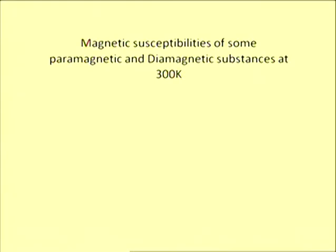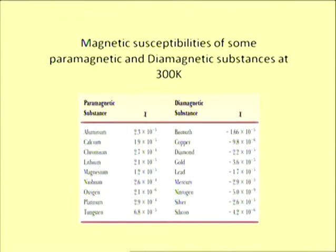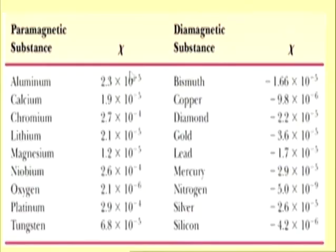Here we have a list of magnetic susceptibilities of some paramagnetic and diamagnetic materials to compare them at 300 K (room temperature). On the left-hand side are paramagnetic materials and on the right-hand side are diamagnetic substances. The susceptibility of paramagnetic materials is very small but positive — much smaller than one but positive. In the case of diamagnetic substances, susceptibility is very very small and negative. The negative sign indicates that dipole moments align in the direction opposite to that of the applied magnetic field.